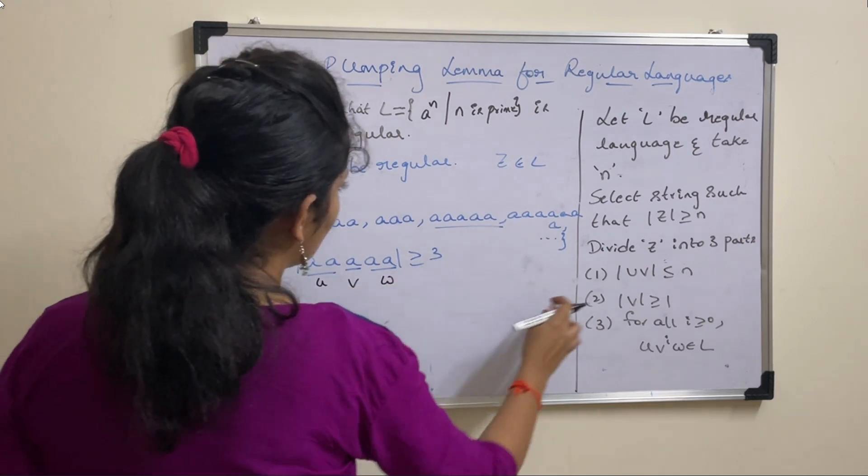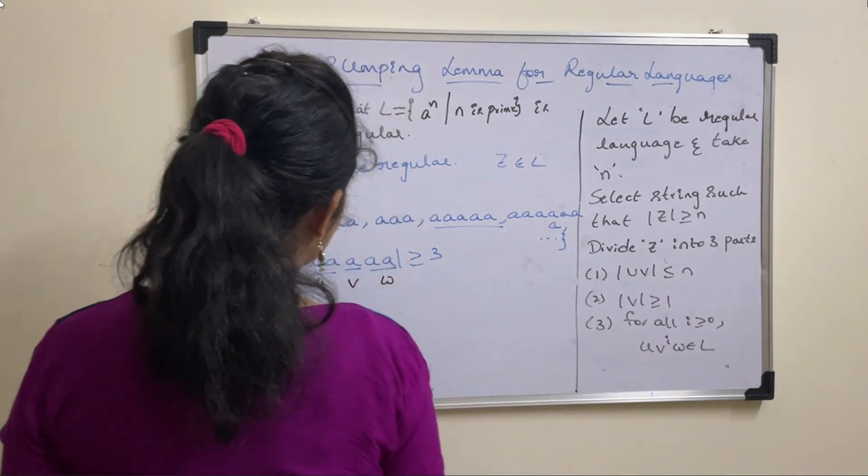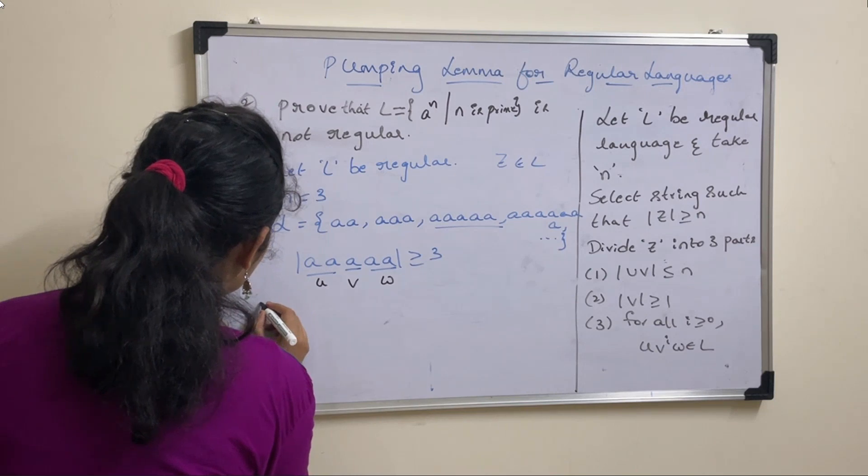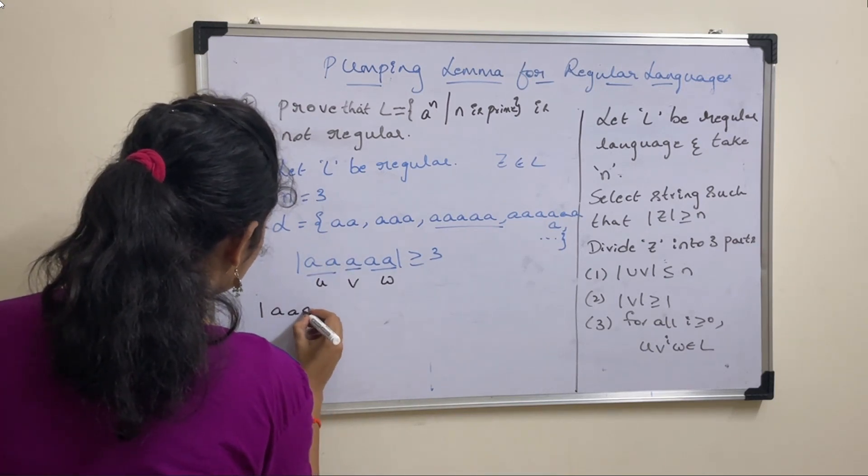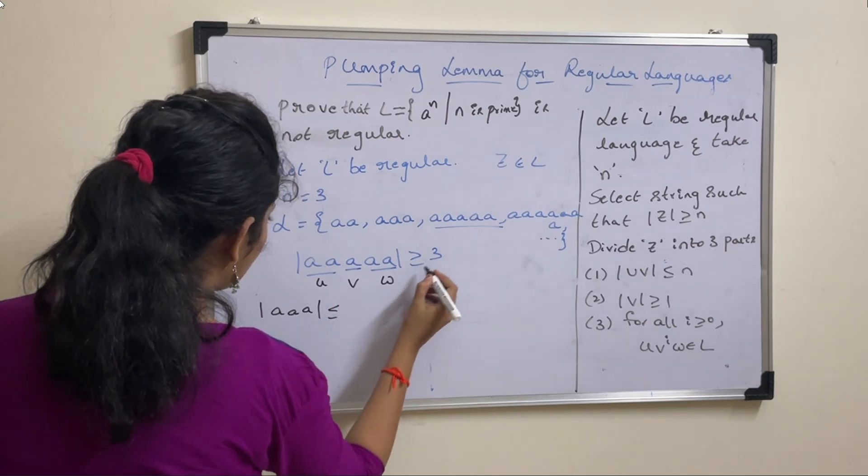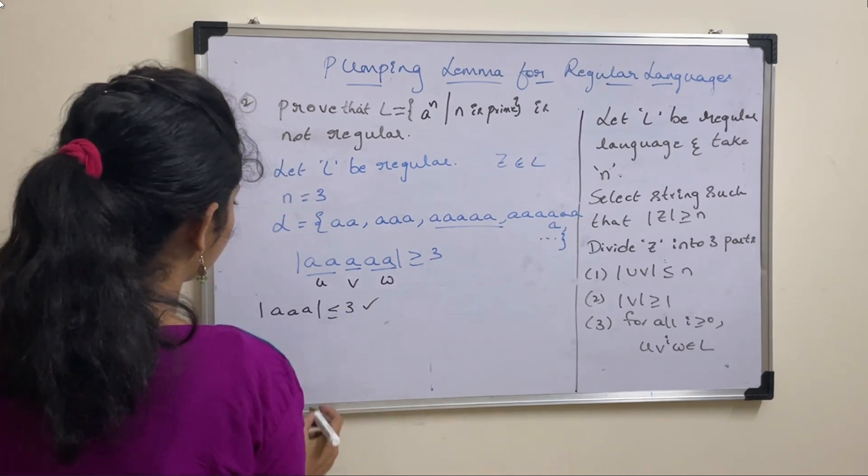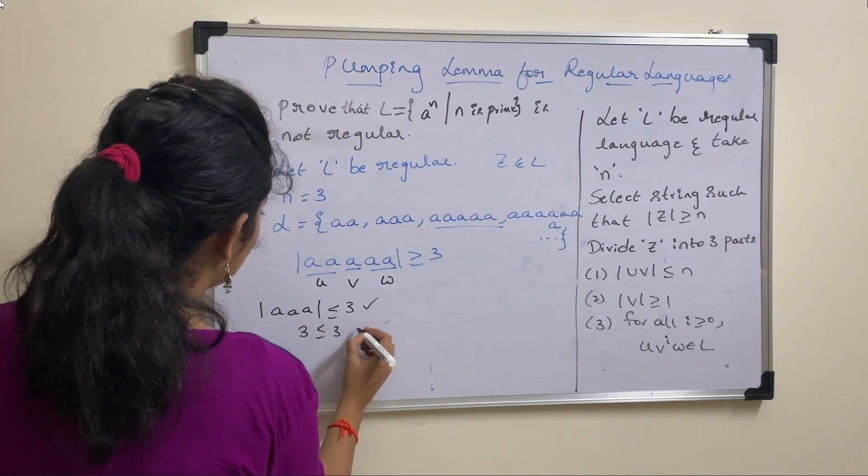Check mod U, V less than or equal to N. Mod U, V means A, A, A, A. Triple A less than or equal to N value is 3. Yes, 3 less than or equal to 3, true.